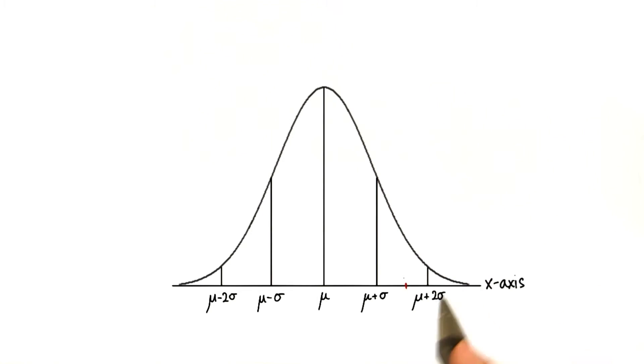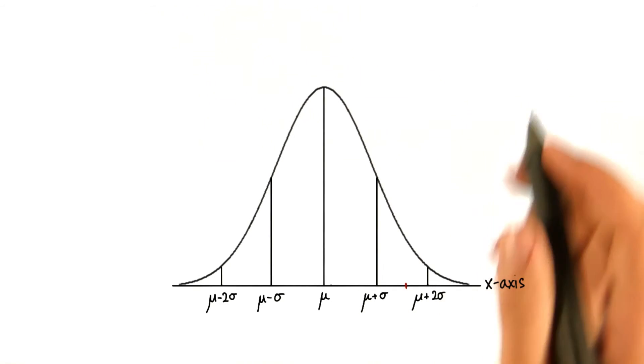Whatever score we might have, we can convert it to a value equal to the number of standard deviations away from the mean. Let's call it z.